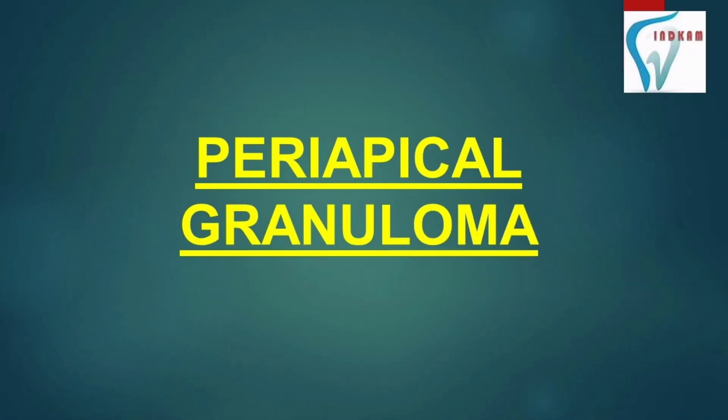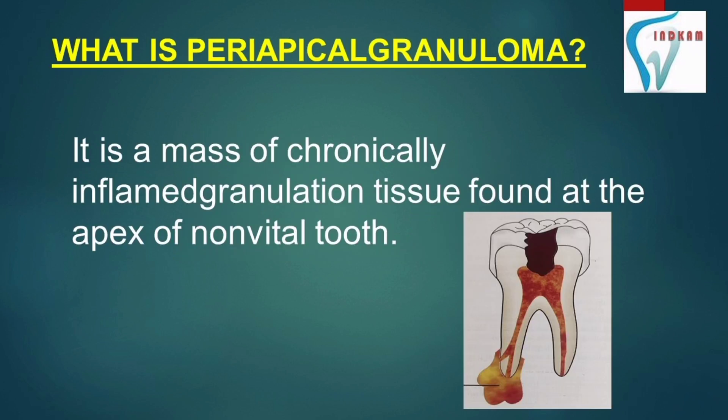Today we are going to learn about periapical granuloma. Periapical granuloma is a mass of chronically inflamed granulation tissue found at the apex of a non-vital tooth. You can clearly see the same in the diagram.